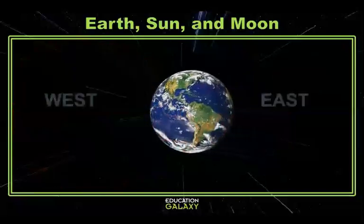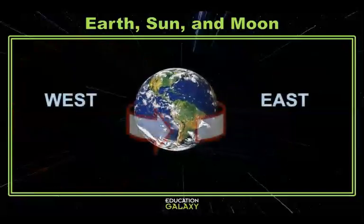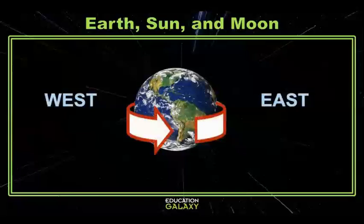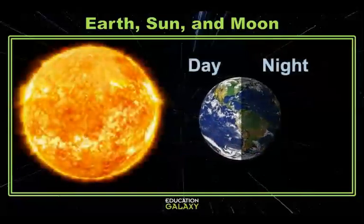The Earth rotates towards the east, and it takes 23 hours and 56 minutes to make one complete rotation. That's why our days are 24 hours long. This eastward rotation, every 24 hours, is what gives us day and night.